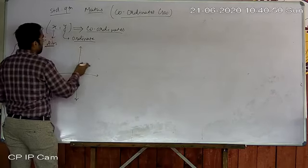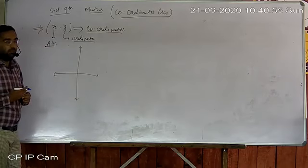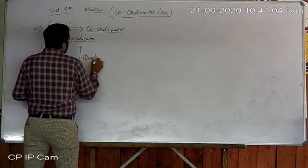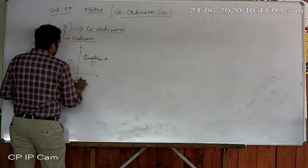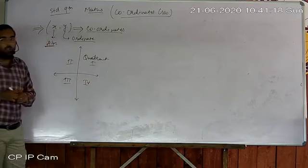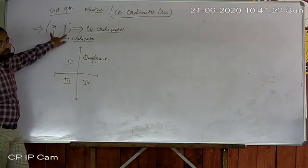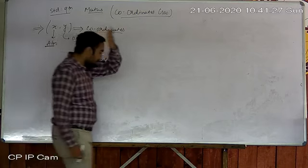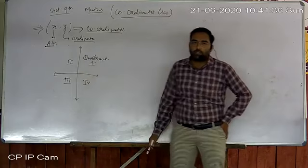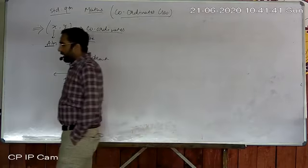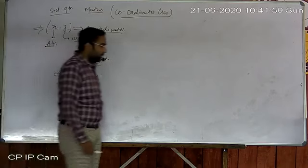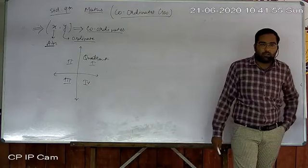We already learned that there are four types of divisions in the graph, each one called a quadrant. In the first quadrant, both x and y values are positive. In the second quadrant, x is negative and y is positive. In the third quadrant, both x and y are negative. In the fourth quadrant, x is positive and y is negative.